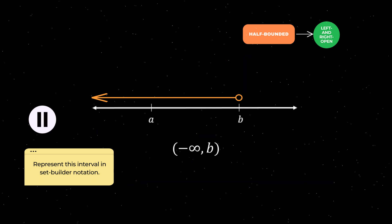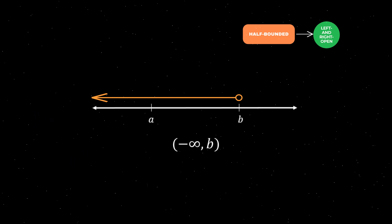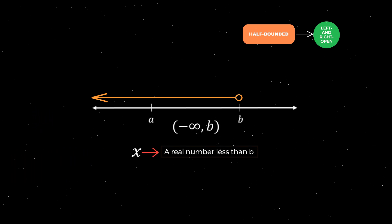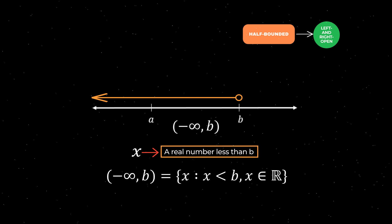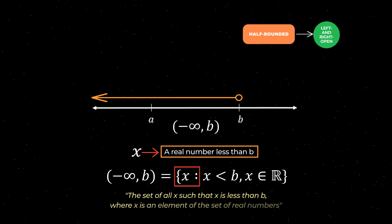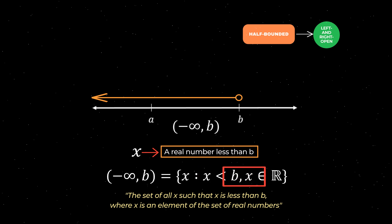To represent this interval in set builder notation, we first define a variable X as a real number less than B, and then we build the number set using curly brackets as shown here. Therefore, this alternative half bounded left and right open interval in set builder notation can be described as the set of all X such that X is less than B, where X is an element of the set of real numbers.